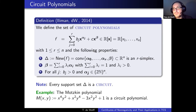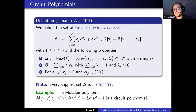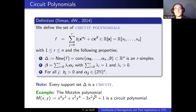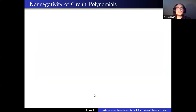Here's an easy example: the Motzkin polynomial. Looking at it carefully, the Newton polytope is a 2-simplex with three vertices: (4,0), (2,2) — wait, (0,4), (4,0), and (0,0). The term with exponent (2,2) is the distinguished term with a negative coefficient, and it lies in the interior of the simplex. Everything checks out — it's a circuit polynomial.